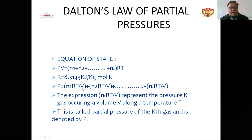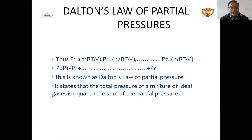PV = n1·RT/V for gas 1, and similarly for gas 2 through gas c. The expression nk·RT/V represents the kth gas occurring at volume V and temperature T. This is called the partial pressure of the kth gas, denoted Pk. So Dalton's Law gives: P1 = n1·RT/V, P2 = n2·RT/V, and Pc = nc·RT/V. The total pressure equals P1 + P2 + ... + Pc — the summation of partial pressures equals the total mixture pressure.